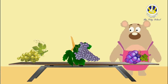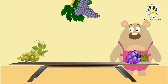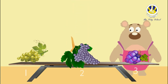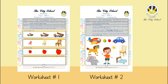Lastly, Mama Bear wanted to buy grapes. She wanted the biggest bunch of grapes. Which bunch of grapes should she buy? Superb — bunch number two, as it is the biggest bunch of grapes! It was fun comparing sizes with you.